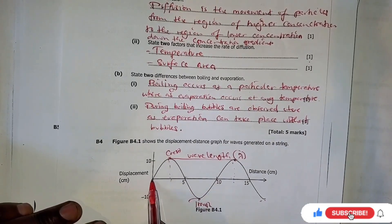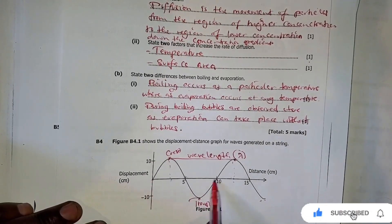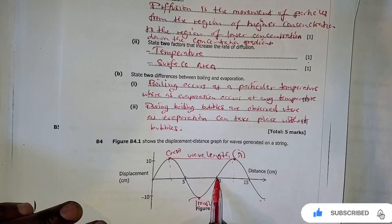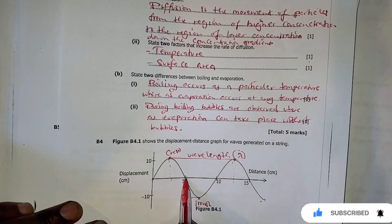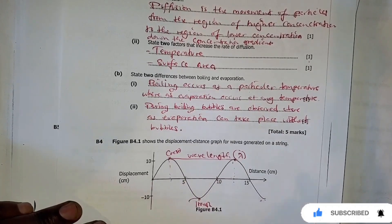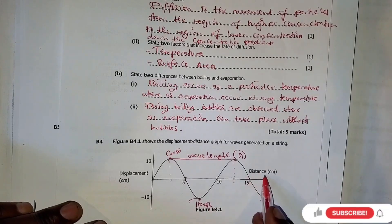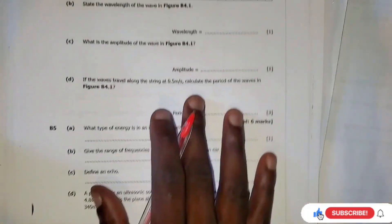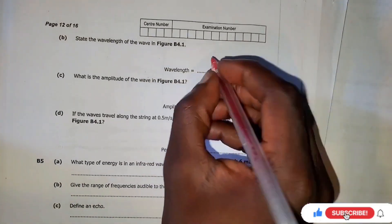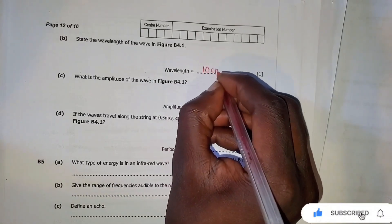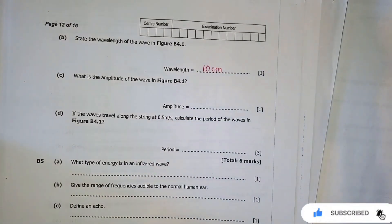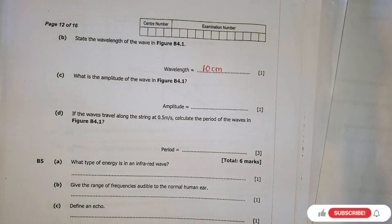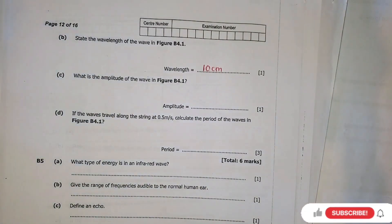From here up to here is 10 — this is a complete wave. From 0 to 5 and onwards, this is a complete wave, so the wavelength is 10 centimeters. The next question is: what is the amplitude of the wave?